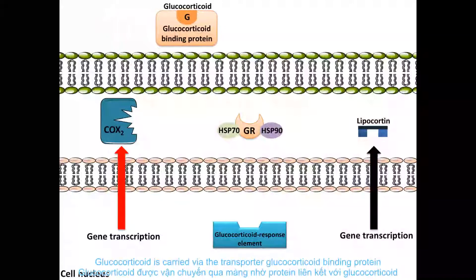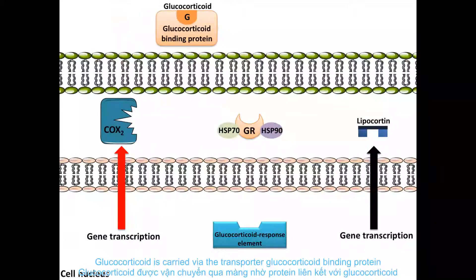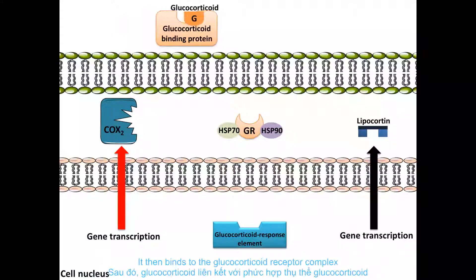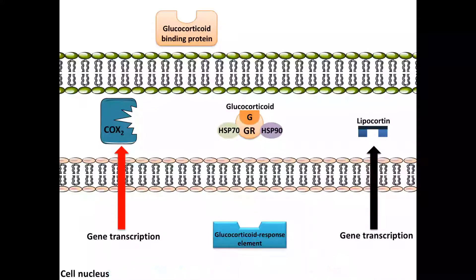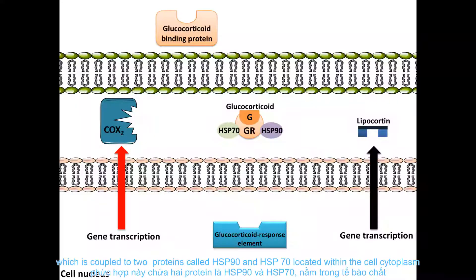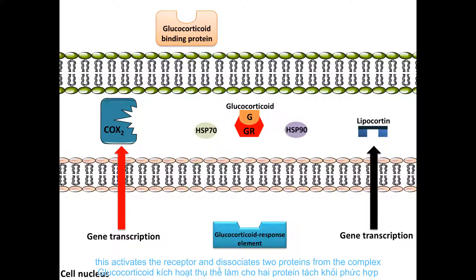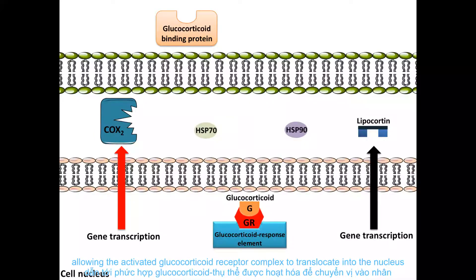Glucocorticoid is carried via the transporter glucocorticoid binding protein. It then binds to the glucocorticoid receptor complex, which is coupled to two heat shock proteins called Hsp90 and Hsp70, located within the cell cytoplasm. This activates the receptor and dissociates the two proteins from the complex.